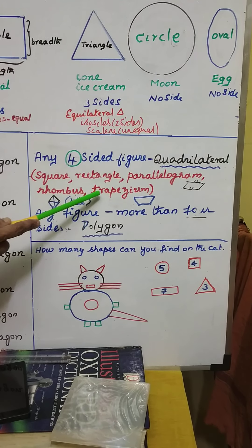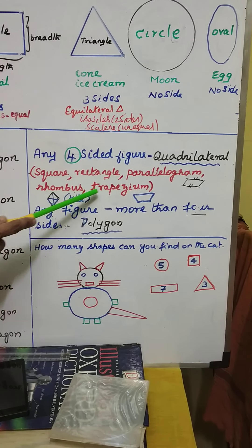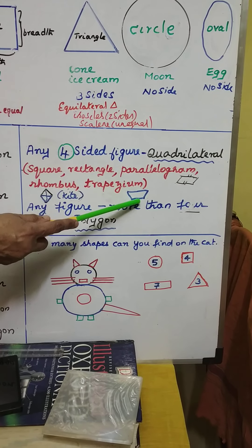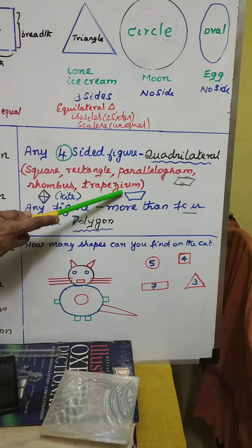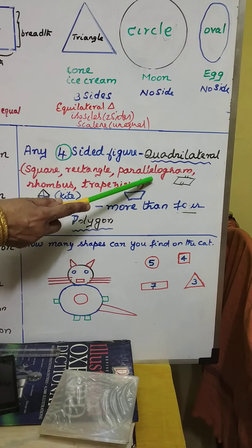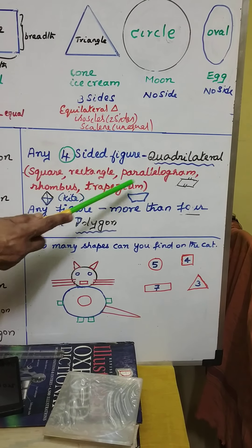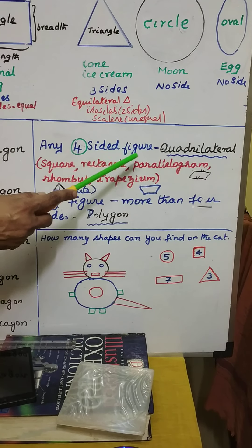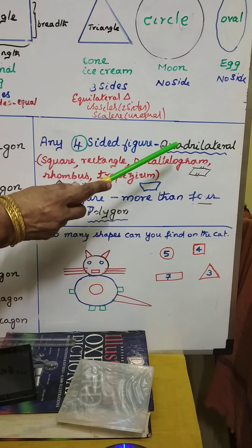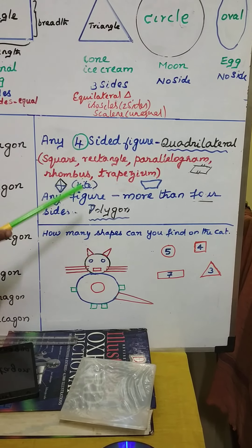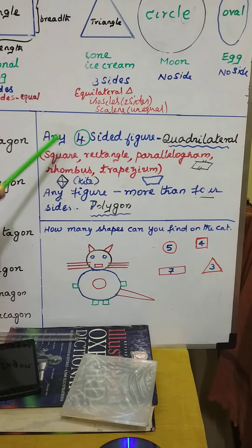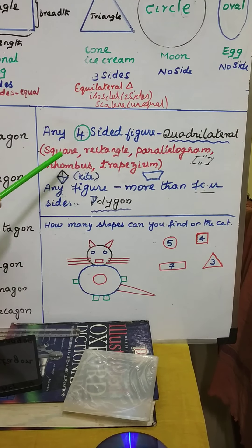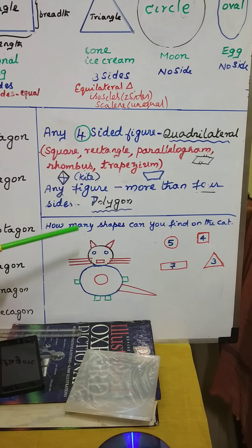Next there is a new term — trapezium — which has got four sides. Look at this: this is the length, this is also length, breadth, breadth. But the shape is a little bit different. It is called trapezium. So under four-sided figures, which are called quadrilateral, you can see: square, rectangle, parallelogram, rhombus, and trapezium.